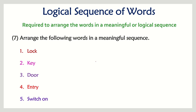Next sequence: lock, key, door, entry, and switch on. The first option would be key, because we require a key to open a lock. Once we open the lock, we open the door. Once we open the door, we enter the room, and once inside the room, we switch on the light or fan. That is the correct sequence.